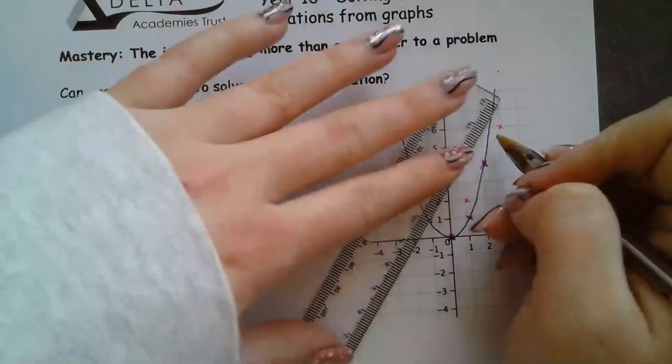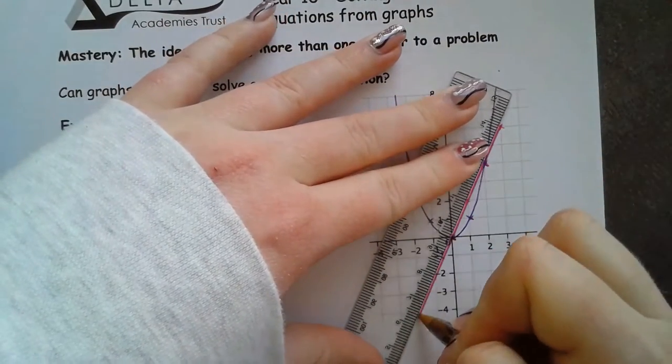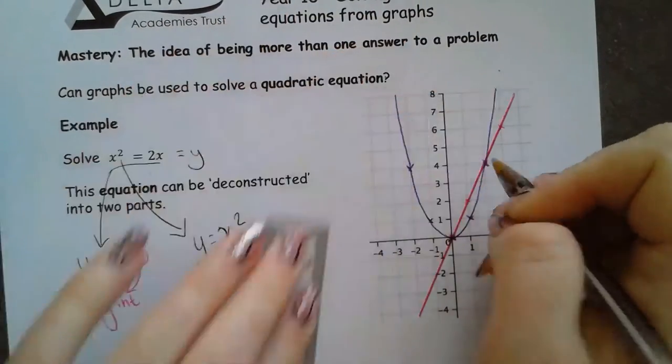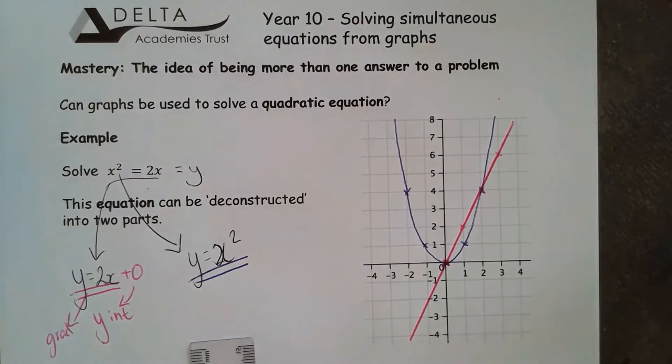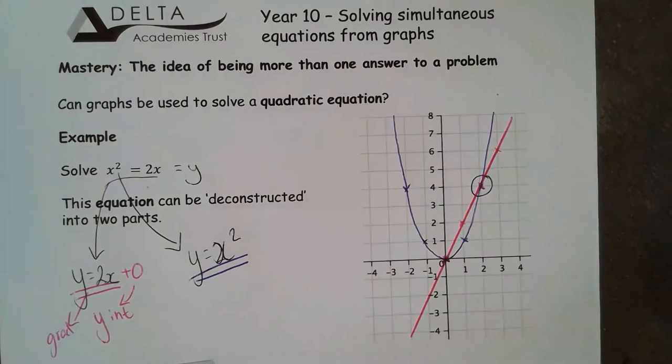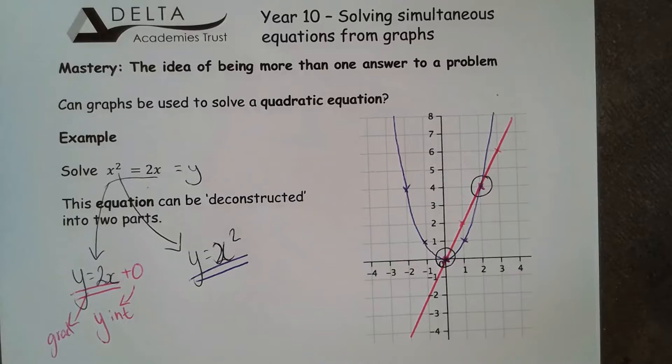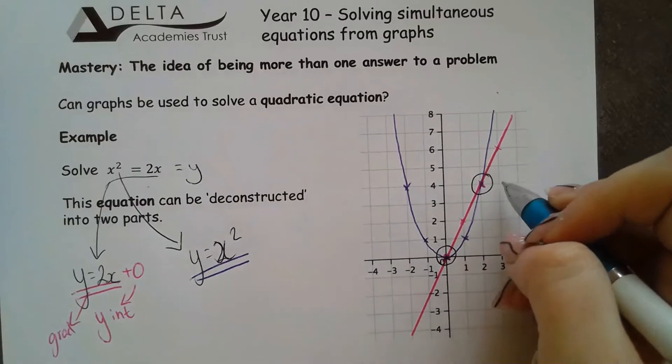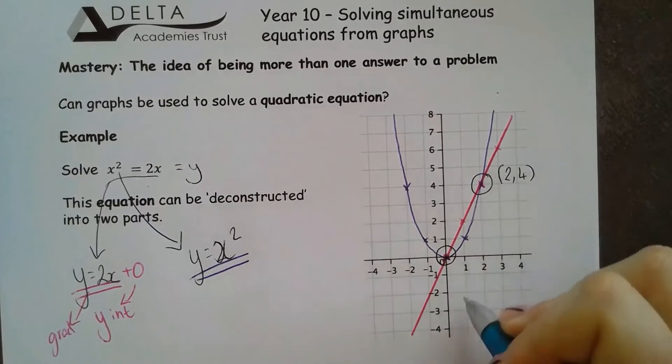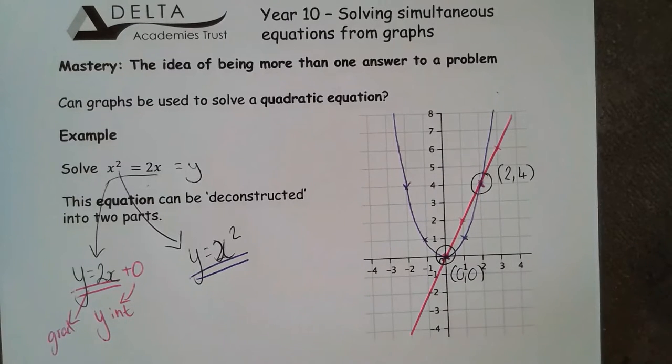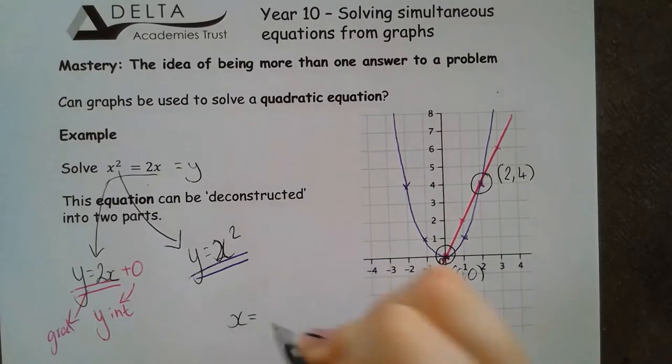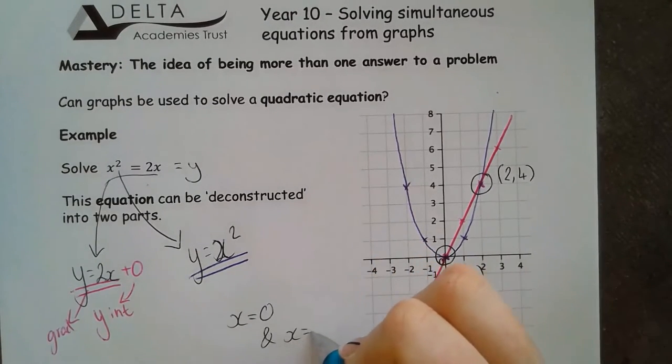I'm now going to connect those with a straight line and once again I'm looking for the places where the line and the curve this time are equal. The place where the line and the curve are equal are their intersection points. There is one of them here and one of them here. I've got this point 2, 4 and this point 0, 0. Because this is a quadratic equation I actually have two potential solutions. Not always but in this case I have got the two. That's x equals 0 and x equals 2.